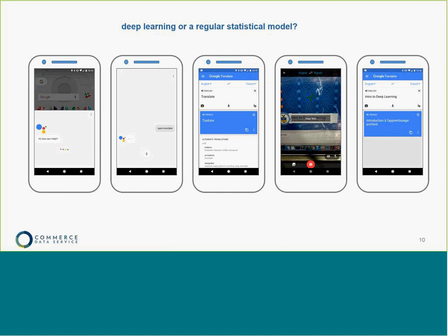This is a good example of a workflow that uses three different deep learning models. If you use the Google Assistant and tell it to open the Translate app, it's using voice recognition to understand that. In the Translate app, if you take a picture of text, it's using language classification to interpret the text. And in order to do the translation, Google recently moved over to using a deep learning model as well.